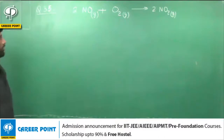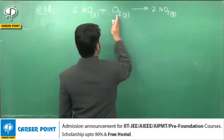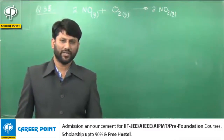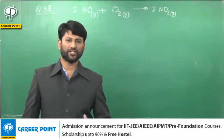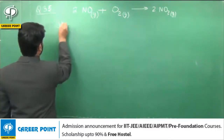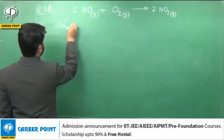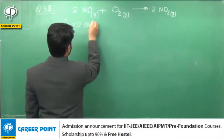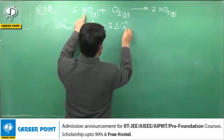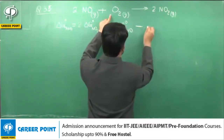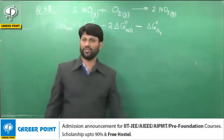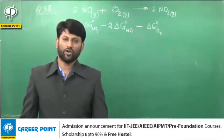अगर हमें Reactants और Products की Standard Free Energy Change पता है तो हम Reaction की Free Energy Change लिख सकते हैं। Reaction की Free Energy Change होती है Total Products की Free Energy Change minus Total Reactants की Free Energy Change। तो ΔG° of Reaction = 2 × ΔG° of NO₂ − 2 × ΔG° of NO(g) − 1 × ΔG° of O₂(g)।